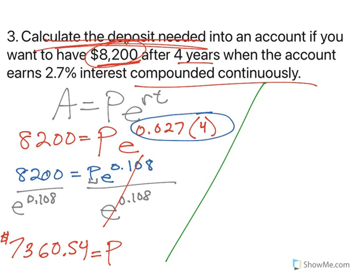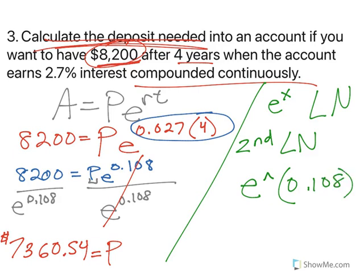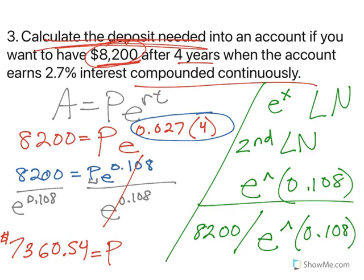Now, E on my calculator, again, dealing with a TI-83 or a TI-30X2S, you're going to find the E to the X button attached to the LN. So you would hit second LN, and when you do that, it's going to show up in your calculator, E, and then I think it has one of these. So that, when you would hit the second LN, give you the E, then you type in the 108. So in your calculator, you would type in 8200 divided by E to the X to the 0.108. And that will give you the answer of $7,360.54.